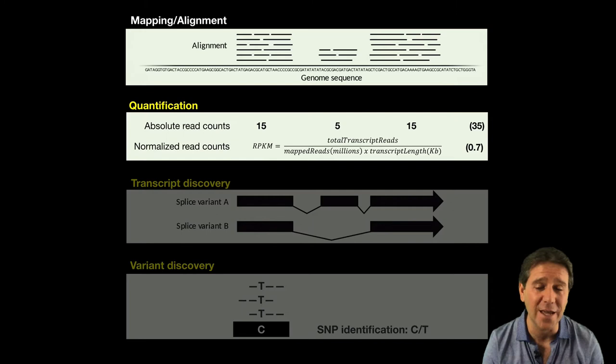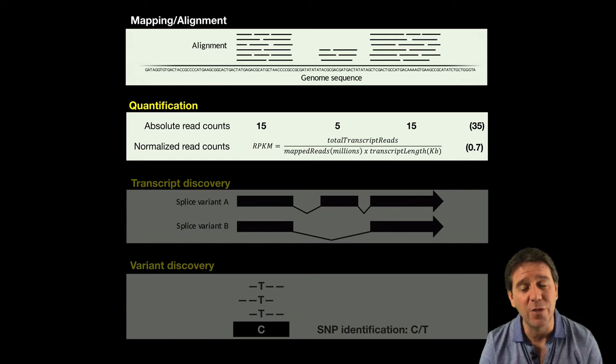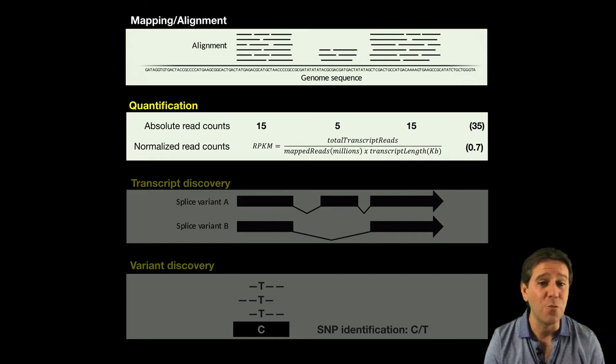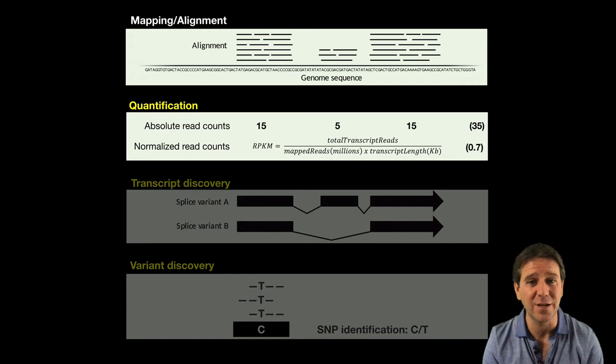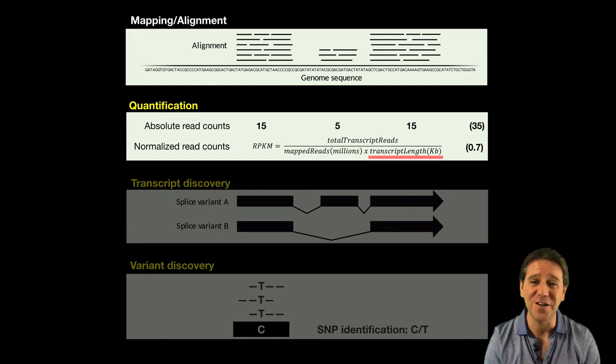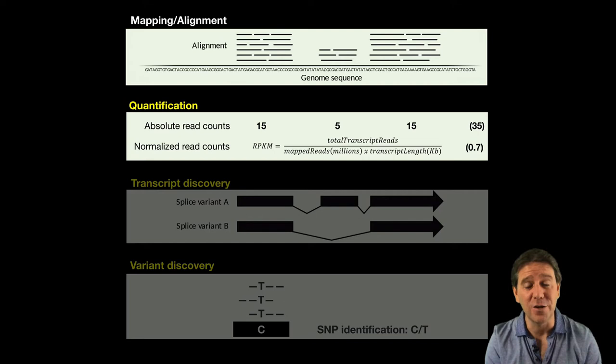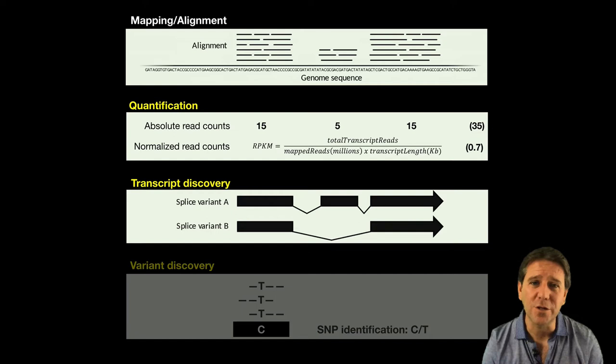We also often report this with normalized measures such as RPKMs or FPKMs that normalize for transcript length and sequencing depth. Longer genes will have more reads mapped to them, so this normalization allows us to compare across genes of different lengths. We also normalize by the number of total mapped reads to compare across different samples with different sequencing depth.